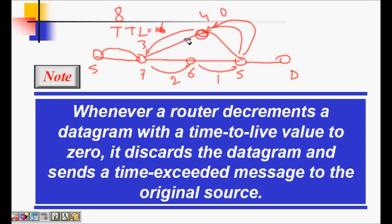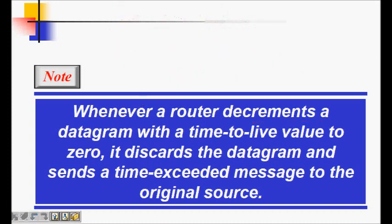So TTL now becomes 0 and I know that the maximum hop limit has been reached by my packet. Some error reporting mechanism should be there that it did not reach the destination and it somehow exceeded the hop length. So ICMP error message will come to the source. Whenever a router decrements a datagram with a time-to-live value to zero, it discards the datagram so that it does not keep on moving inside the loop, and it sends a time-exceeded message to the original source.